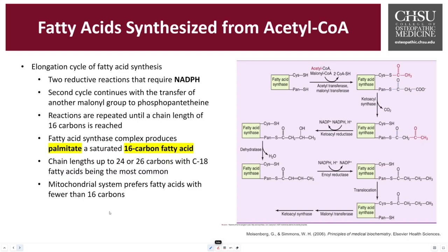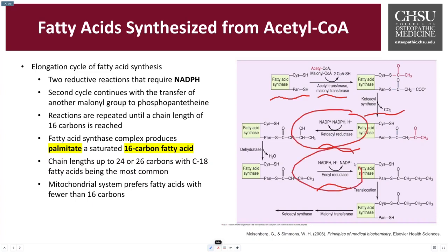The most common product the complex produces is palmitate, a 16-carbon fatty acid, though it can produce chains up to 24 or 26 carbons, with C16 to C18 being the most common range preferred by the mitochondria. The fatty acid synthase complex transfers malonyl and acetyl groups, elongating the fatty acid chain. Key steps include a ketoreductase step and an enoyl reductase step, both requiring NADPH. Eventually, through translocation steps, a C16 to C18 fatty acid is produced.